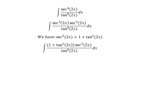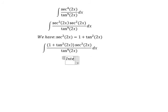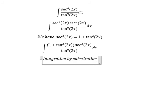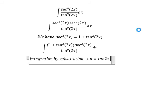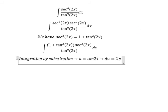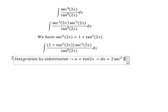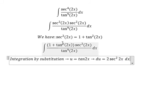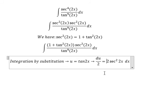Next, we can use integration by substitution. We let u equal to tan(2x), so du equals 2·sec²(2x)·dx. Because we don't have the number 2 in here, we divide both sides by 2.